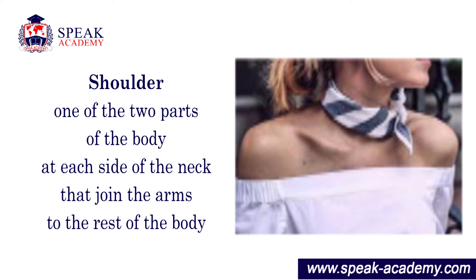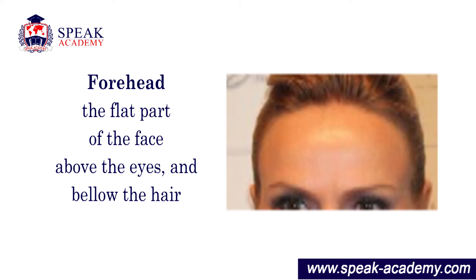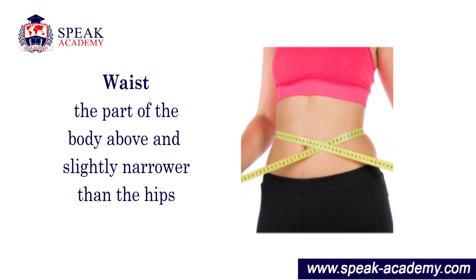Shoulder: one of the two parts of the body at each side of the neck that join the arms to the rest of the body. Forehead: the flat part of the face above the eyes and below the hair. Waist: the part of the body above and slightly narrower than the hips.